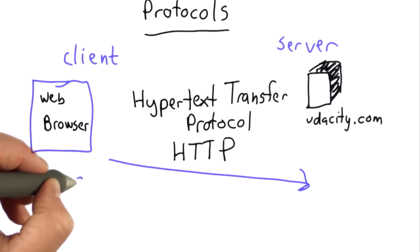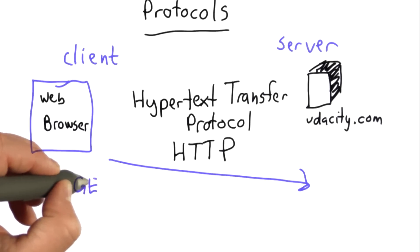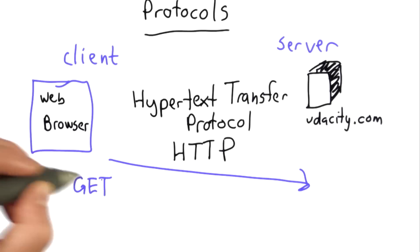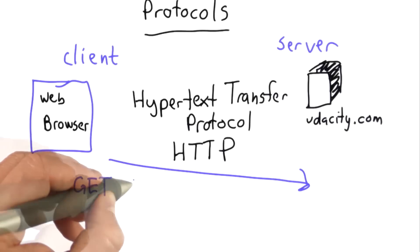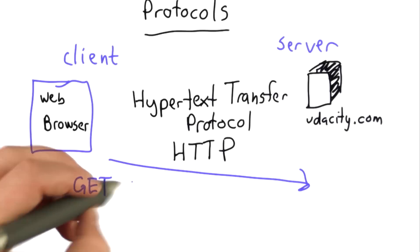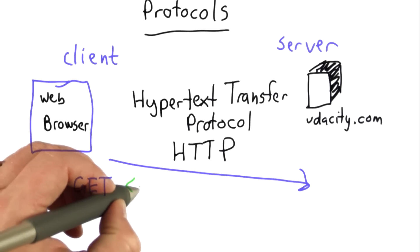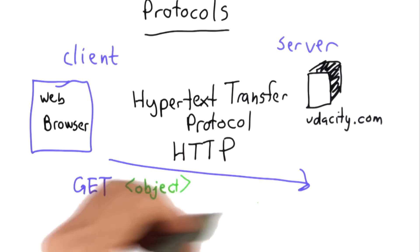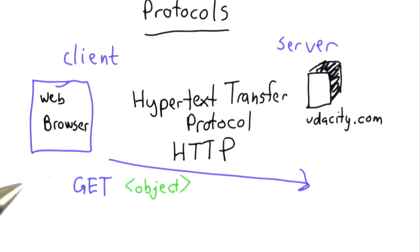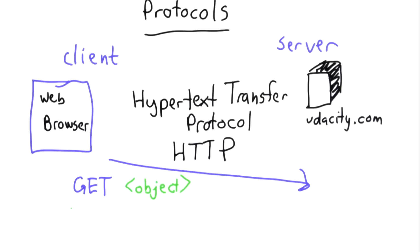That's the message called GET. The client can send a message to the server where the message says GET, and then the name of the object that you want to get. So that's all the client does. It sends a message like this. And if you remember the Python code for get_page, well it's calling some library function that actually does this — it's sending the GET message to the server.